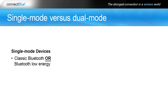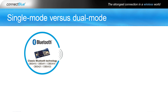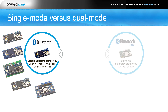Classic Bluetooth implementations are single mode implementations. But with the addition of Bluetooth Low Energy, there are also single mode Bluetooth Low Energy devices. Because the two technologies are fundamentally different from an application perspective, one either implements single mode or dual mode solutions depending on one's need. On the left, you see classic Bluetooth implementations, which are to be used in Bluetooth applications where streaming data is used.